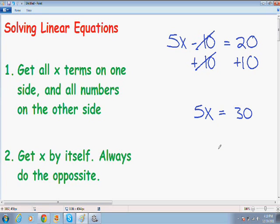And now moving on to step number two is get x by itself. And that's the whole idea behind these equations is we want to solve for x. We need to get x by itself. So in order to do that, you always have to do the opposite.